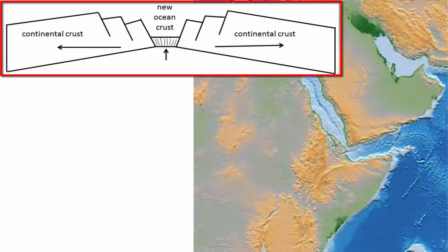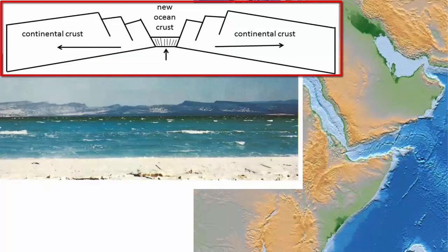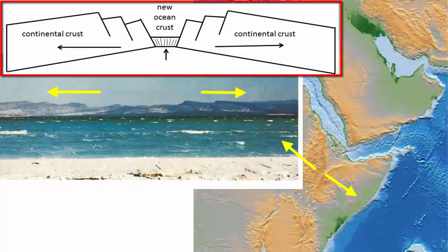This cartoon shows what a divergent plate boundary first looks like as it breaks through continental crust. Notice the square shape to the valley and the jagged, down-dropped edges of the continent. Compare that to this photograph — notice the square shape to the valley and the down-dropped edges of the continent. Eastern Africa is part of a new rift zone and one of the only places to see this type of plate boundary at this stage on land.